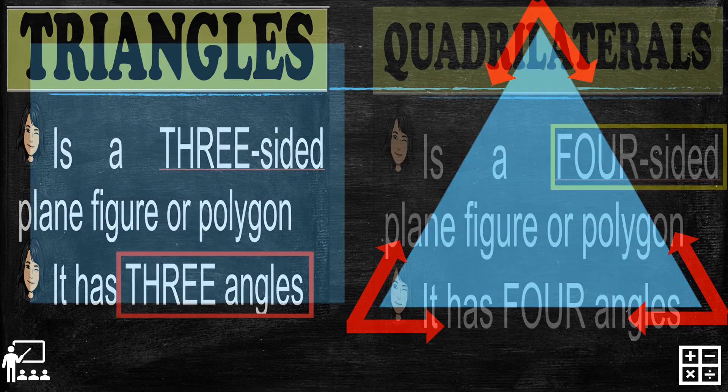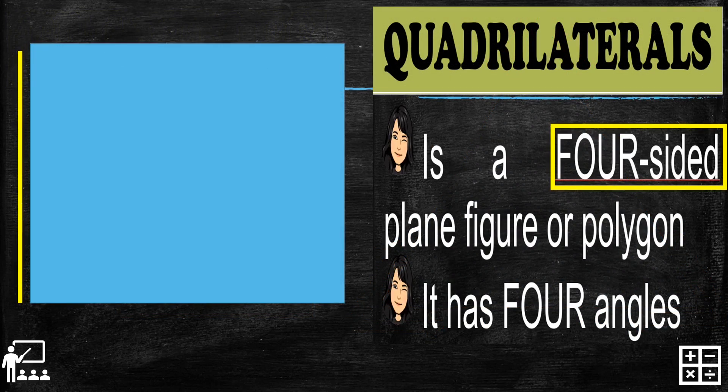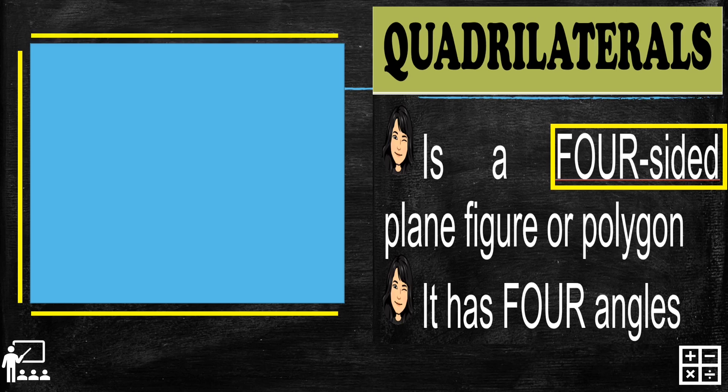So let's move on to the quadrilateral. Where are the four sides of a quadrilateral? The first, second side, third, and the last. So here are the four sides of a quadrilateral.